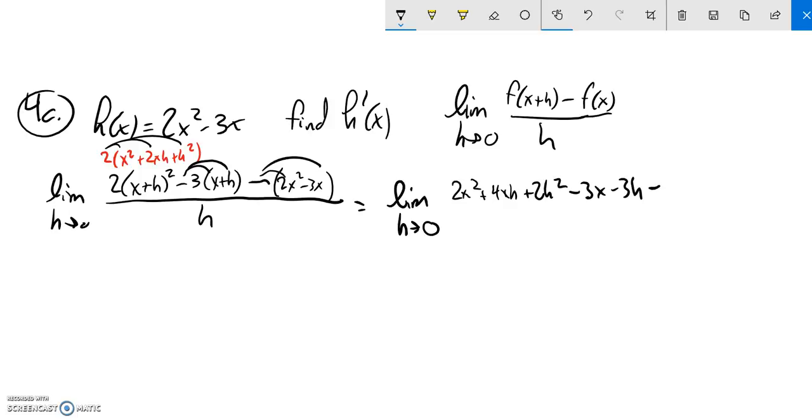Distribute that negative into there, minus 2x squared plus 3x. And that whole thing's over h. Let me see what cancels out here. 2x squared minus 2x squared is 0. Negative 3x plus 3x is 0. Great.